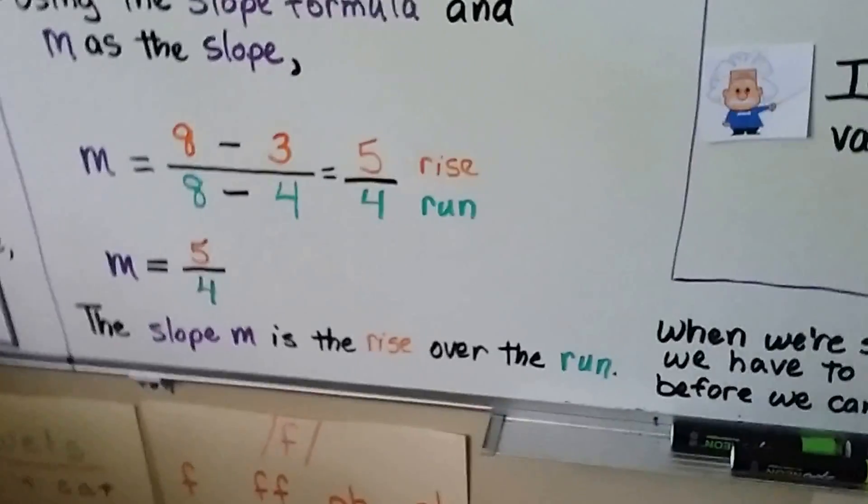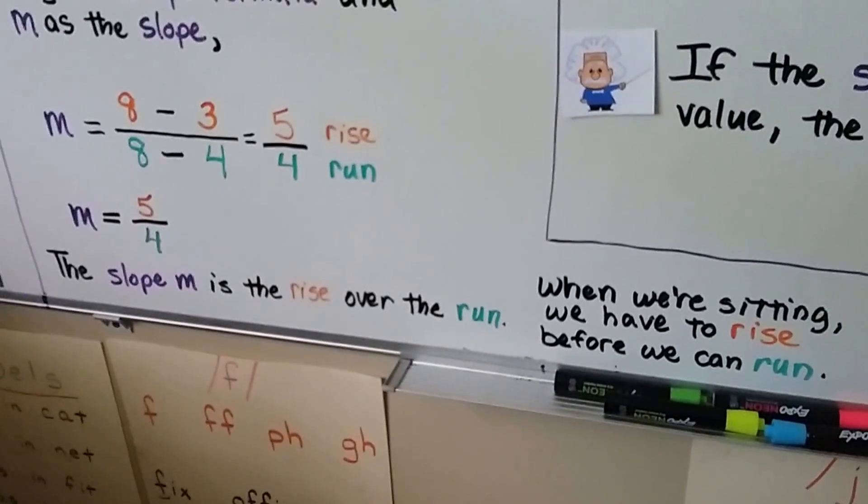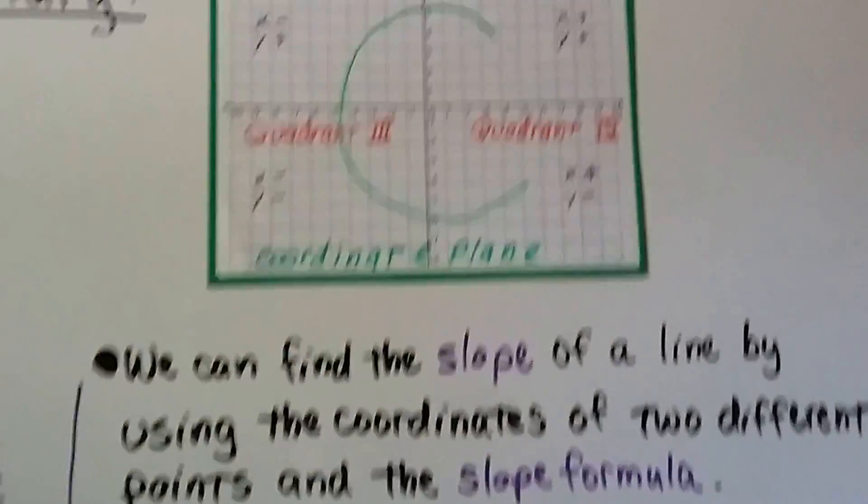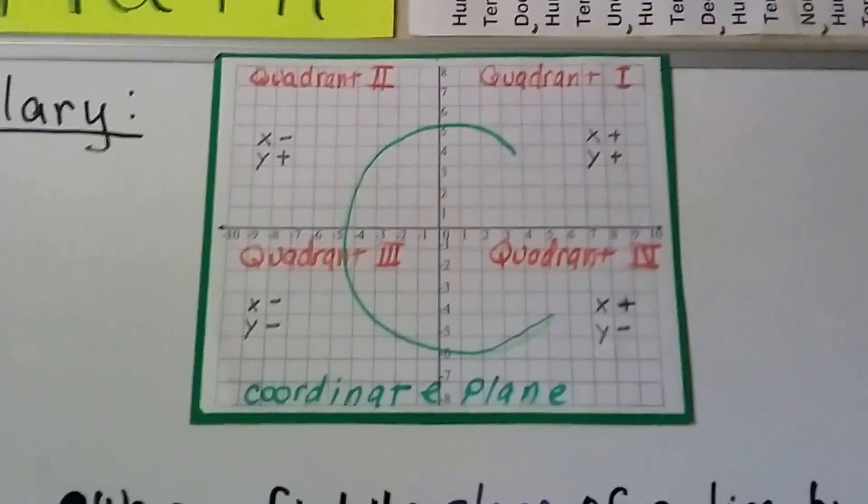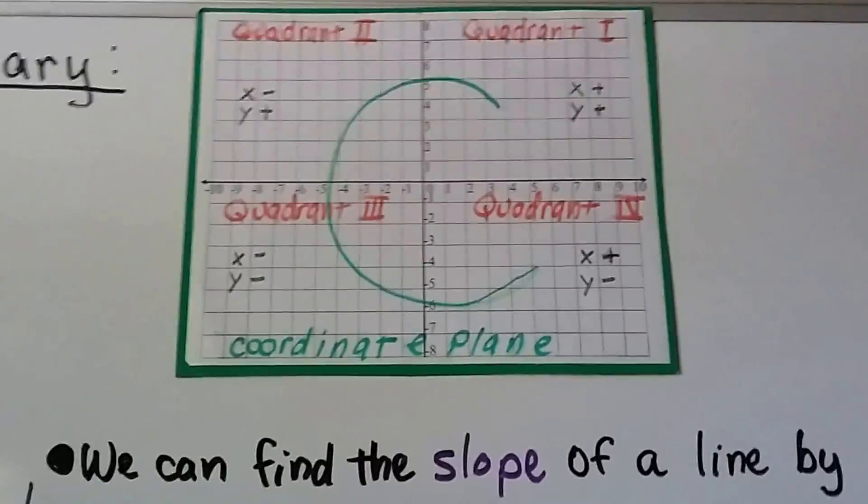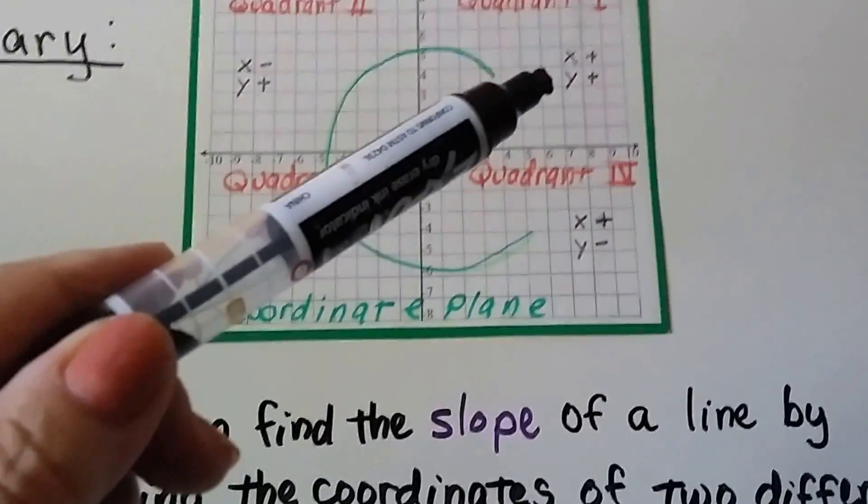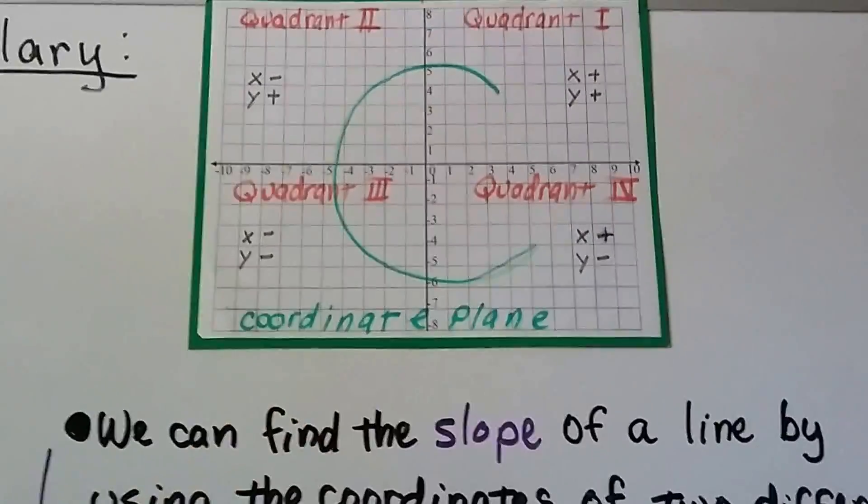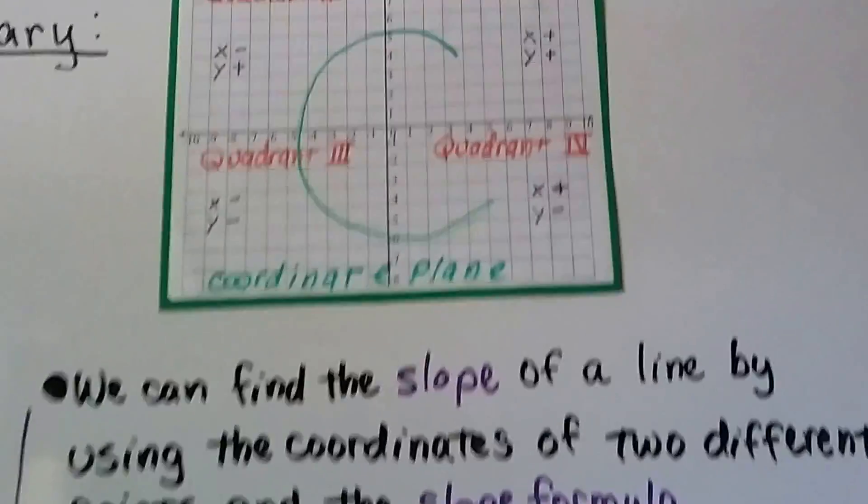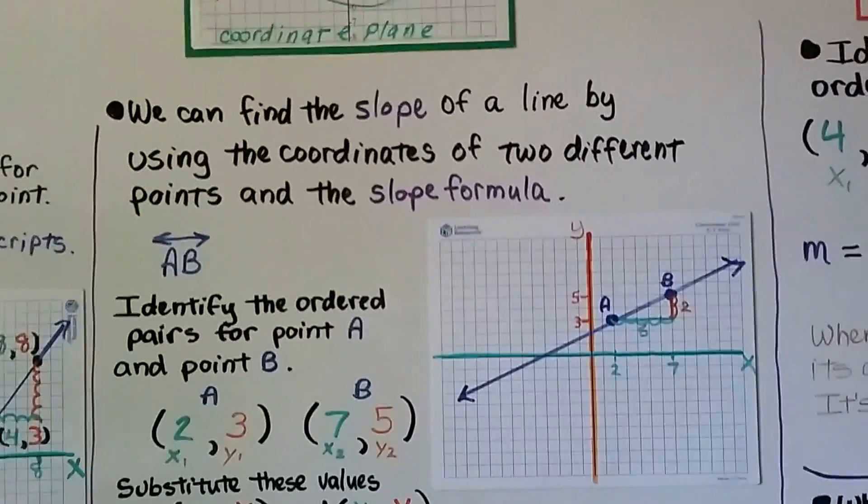So you could think of it this way for an analogy. When we're sitting, we have to rise before we can run. So it's the rise over the run. I've shown this before in several of my videos. The coordinate plane has 4 quadrants. 1, 2, 3, 4. And we can remember where the quadrants are because it's a coordinate plane that starts with a C and they make the shape of a C. It starts here and curves around and makes the shape of a C for coordinate plane. And we can find the slope of a line by using the coordinates of two different points and the slope formula.